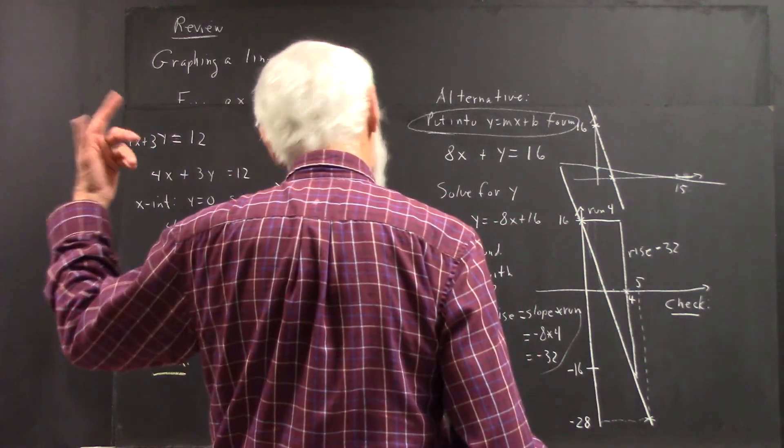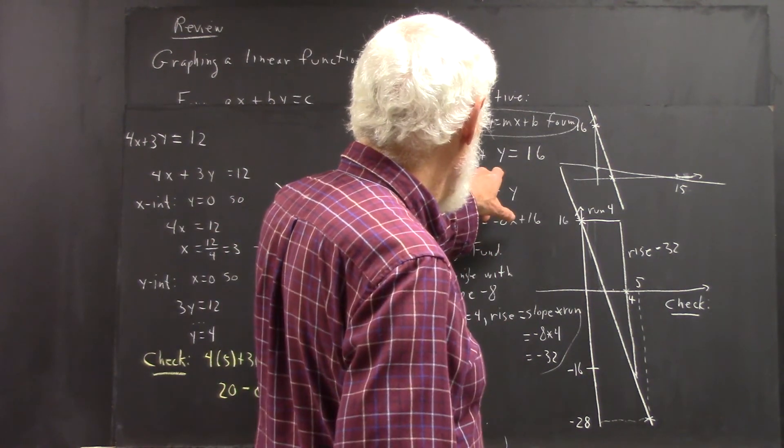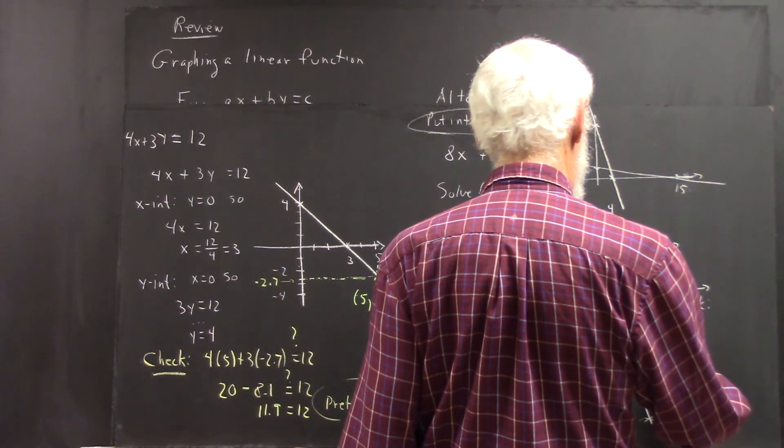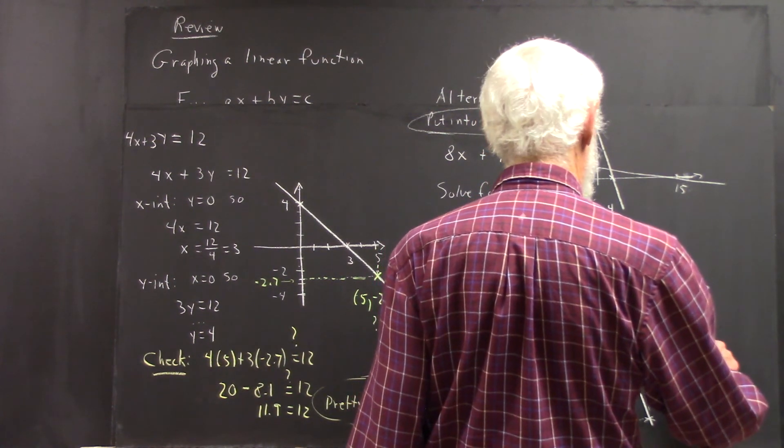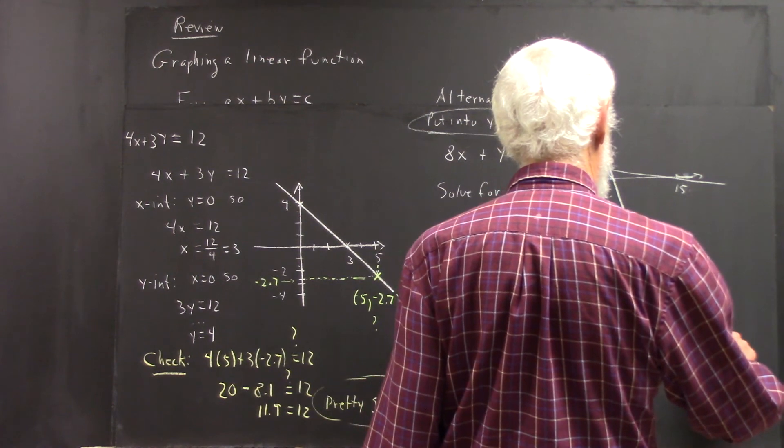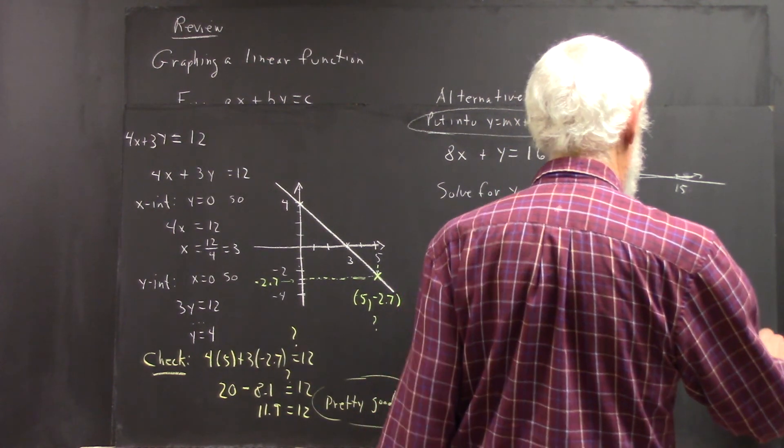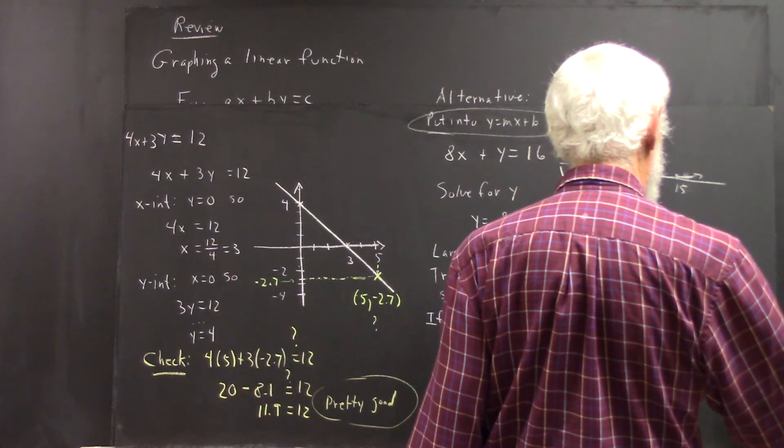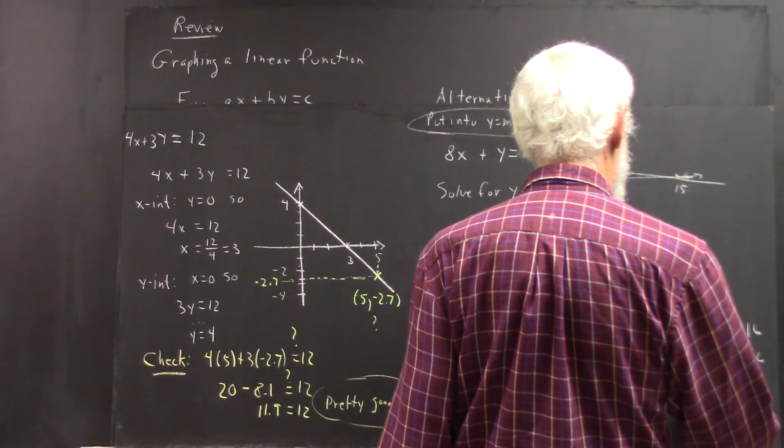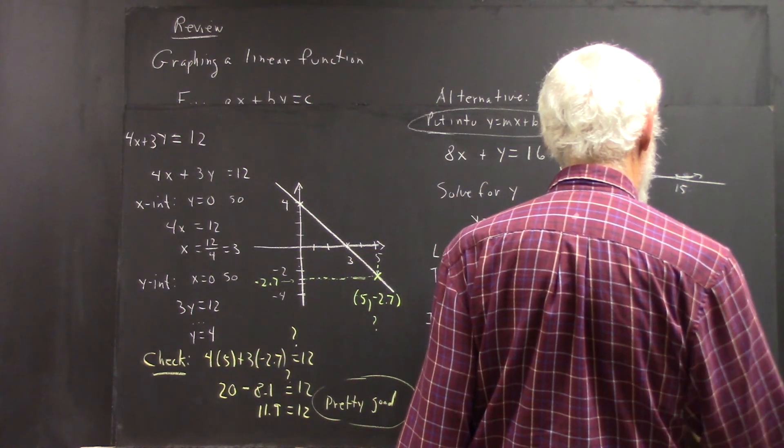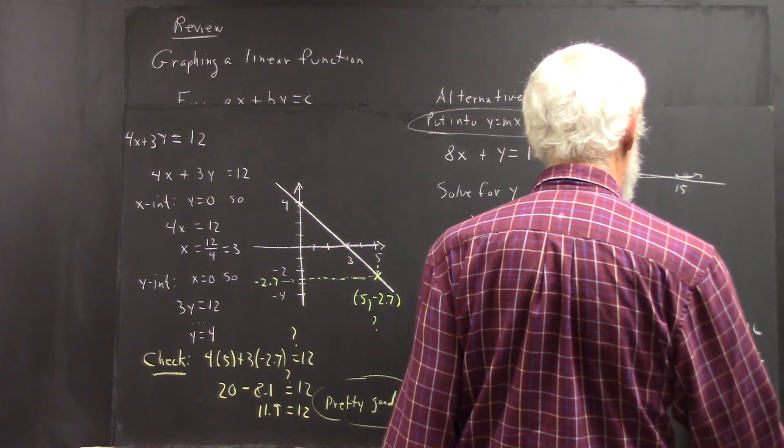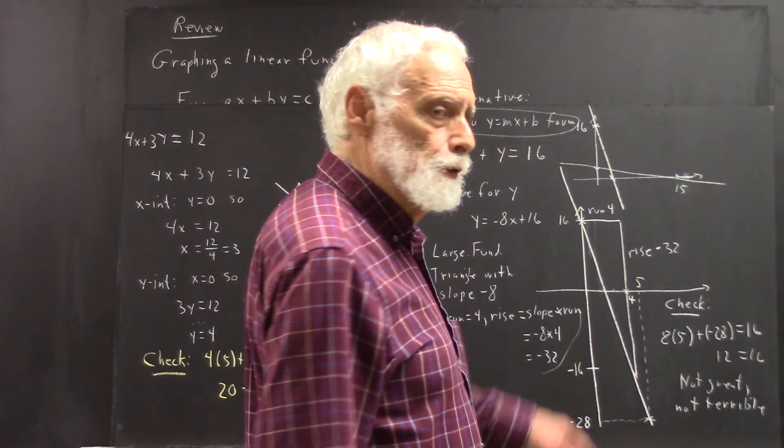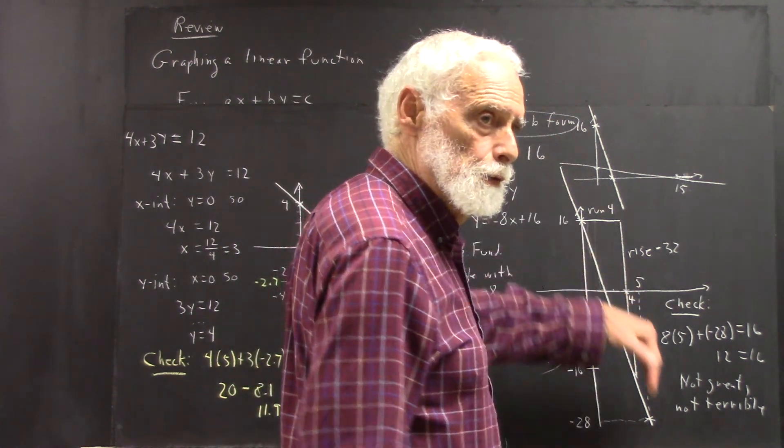In the original equation, not in the one we solve for y, we plug these numbers in. And we get 8 times 5 plus negative 28 equals 16. Now, you do the arithmetic yourself. What you get is 12 equals 16. That's not great. And it's not terrible. But it's plausible that we have the correct straight line here.